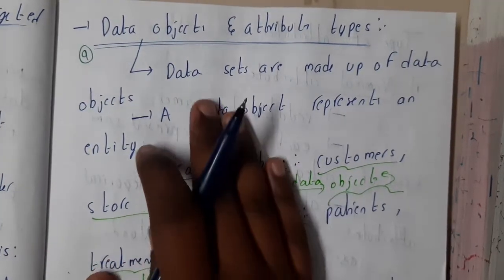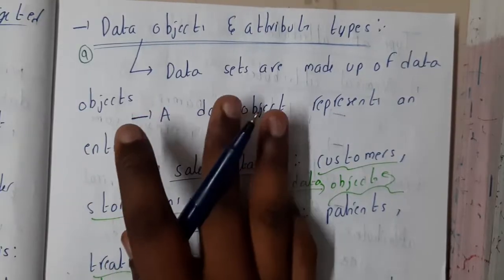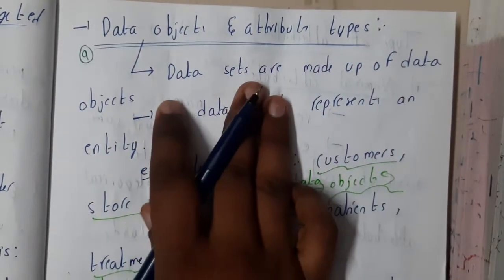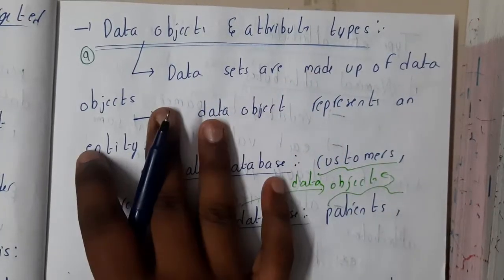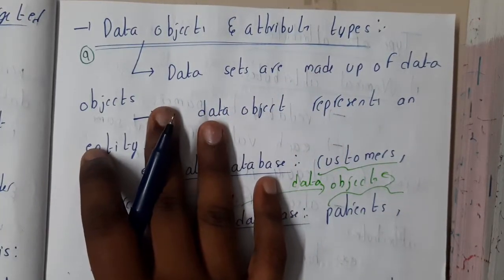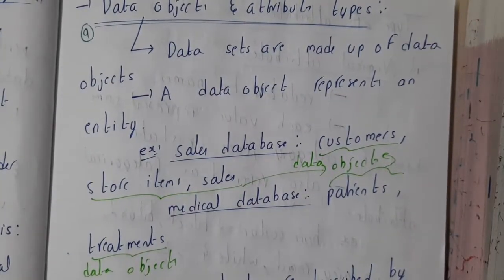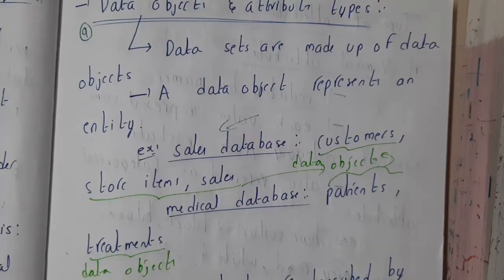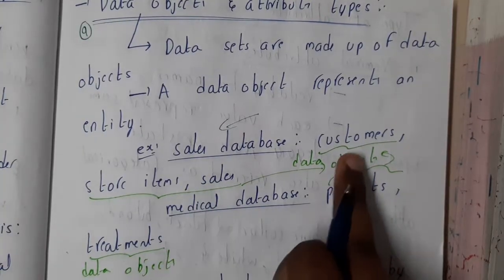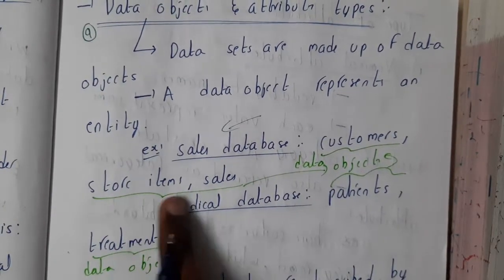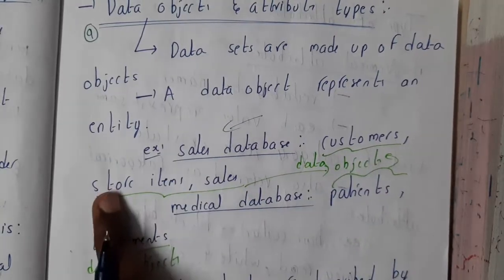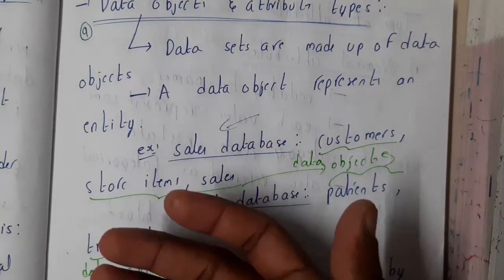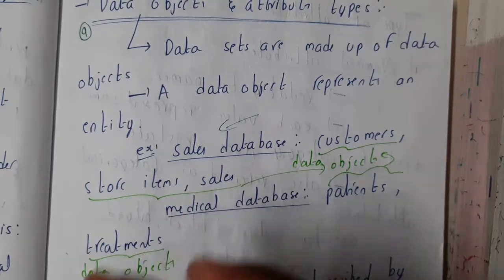The concept is really easy — there is nothing much to learn here. First let us go through the concept of data objects, then attributes and their types. Data sets are nothing but data objects. So what are data objects? Assume we are having a sales database with some columns: customer, store, item, and sales. These columns — customer, store, item, sales — are nothing but data objects. In simple words, each and every column is a data object.